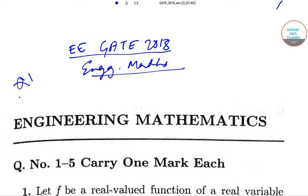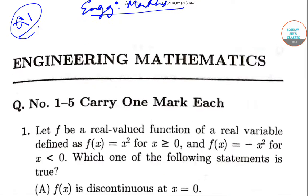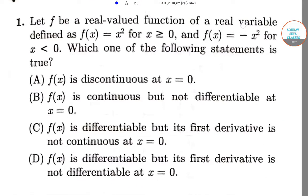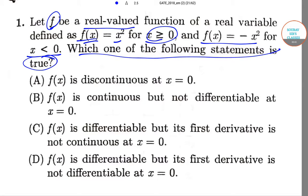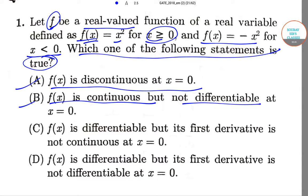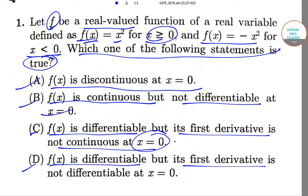We'll be starting off with question number one. It has been said that let f be a real valued function of a real variable defined as f(x) = x² for x ≥ 0, and f(x) = −x² for x < 0. Which of the following statements is true? Option A: f(x) is discontinuous at x = 0. Option B: f(x) is continuous but not differentiable at x = 0. Option C: f(x) is differentiable but its derivative is not continuous at x = 0. Option D: f(x) is differentiable but its derivative is not differentiable at x = 0.